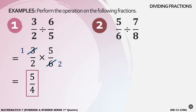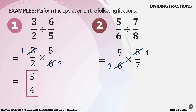Example number 2: 5 over 6 divided by 7 over 8. Copy the dividend, 5 over 6; get the reciprocal of the divisor, 7 over 8 becomes 8 over 7. Then proceed to multiplication. We can cancel 8 and 6 by 2: 8 divided by 2 is 4, 6 divided by 2 is 3. Our answer is 5 times 4 over 3 times 7 — that's 20 over 21. So ganun lang ang pag-divide ng mga fractions: una, kukunin mo yung reciprocal nung divisor and then multiply.